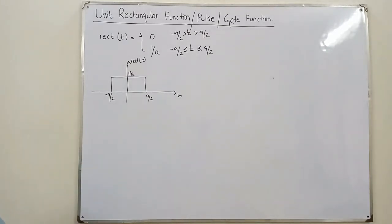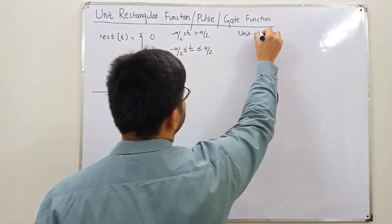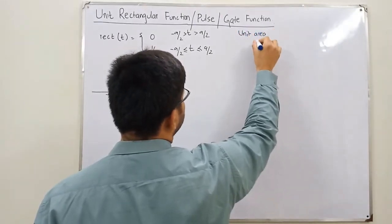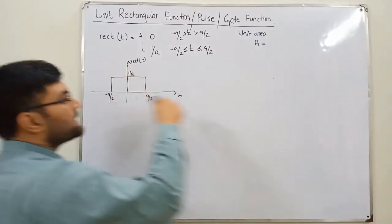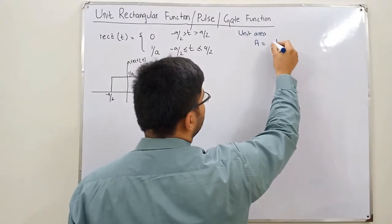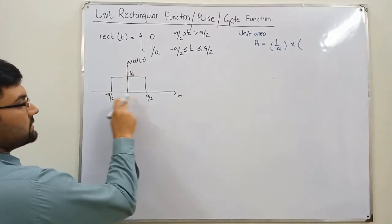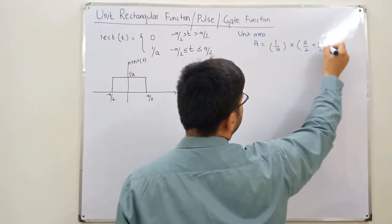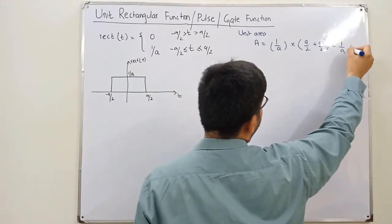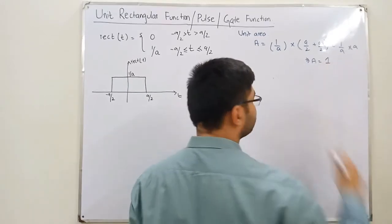Now why is this called a unit rectangular function? Because the area is always unit. You have a unit area. So you can write the area to be what? It will be the base multiplied with the height. The height is 1 over a, and you multiply it with the base. This is the point a by 2 plus a by 2, so this is 1 over a multiplied by a. So the area comes out to be 1. Is that fine?